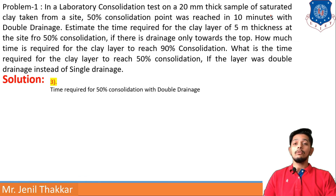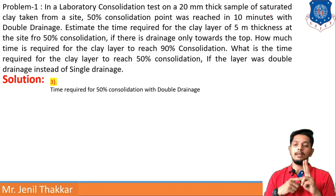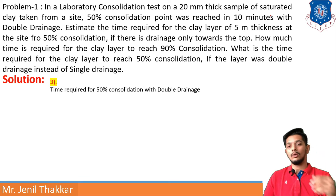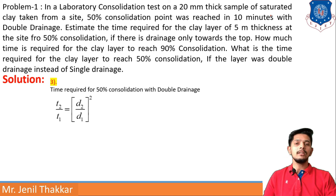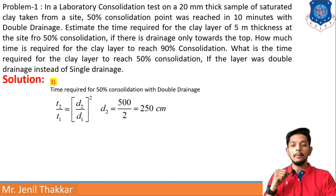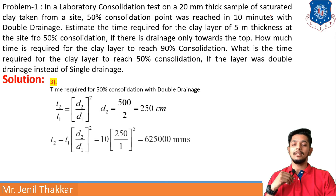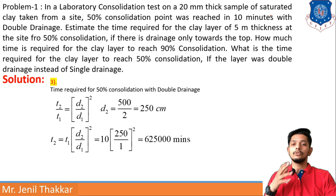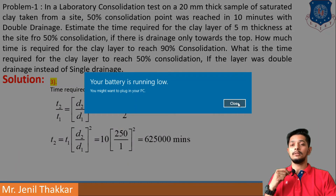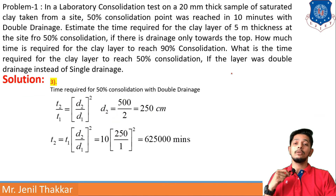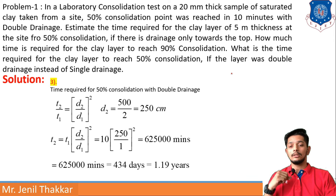Item 3: time required for 50% consolidation with double drainage. Two things to note: it is a double drainage case and consolidation is 50%. Using the formula T2/T1 = (D2/D1)², D2 is taken as 500/2 = 250 cm due to double drainage. With T1 = 10 minutes, D2 = 250 cm, and D1 = 1 cm, T2 comes out as 625,000 minutes, which converts to 1.19 years.